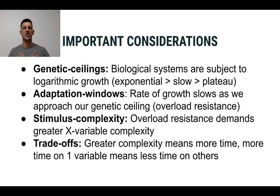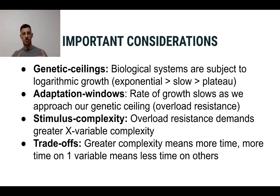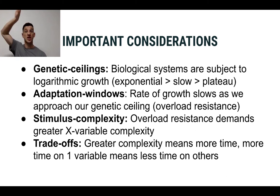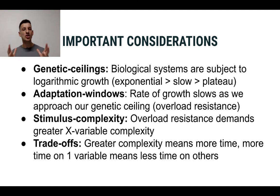There are four very important things to consider when it comes to the progressive overload principle — things to always keep in mind when constantly stressing the body to produce an adaptive response. All biological adaptations are subject to logarithmic growth as opposed to exponential growth. There are two types of growth: exponential means you see slow growth and eventually it shoots up almost infinitely — that's not true of biological systems.